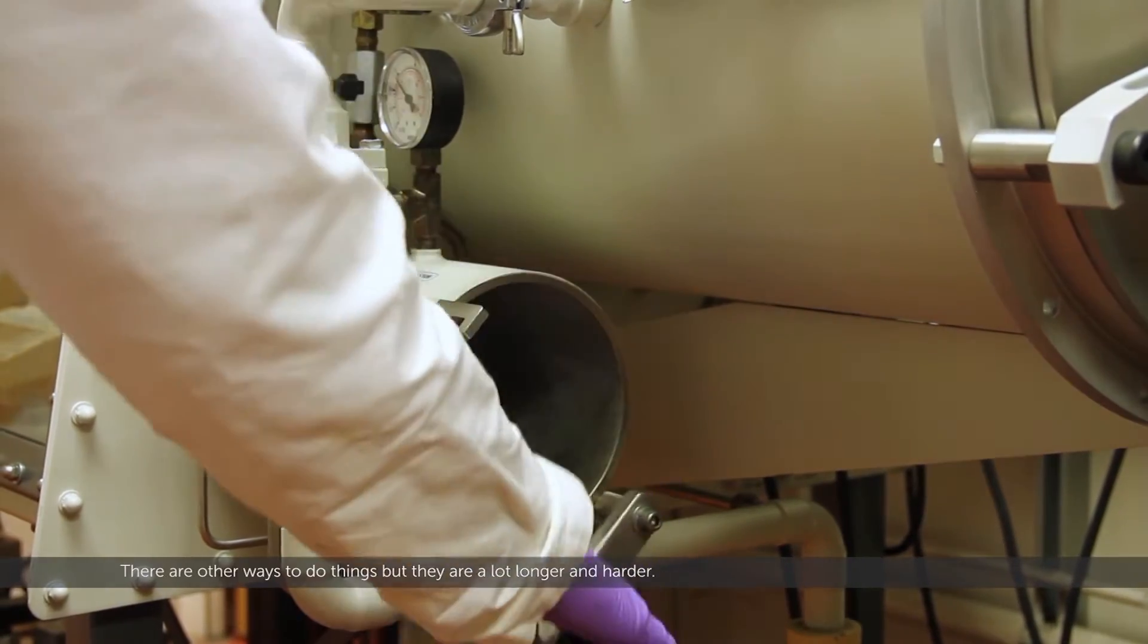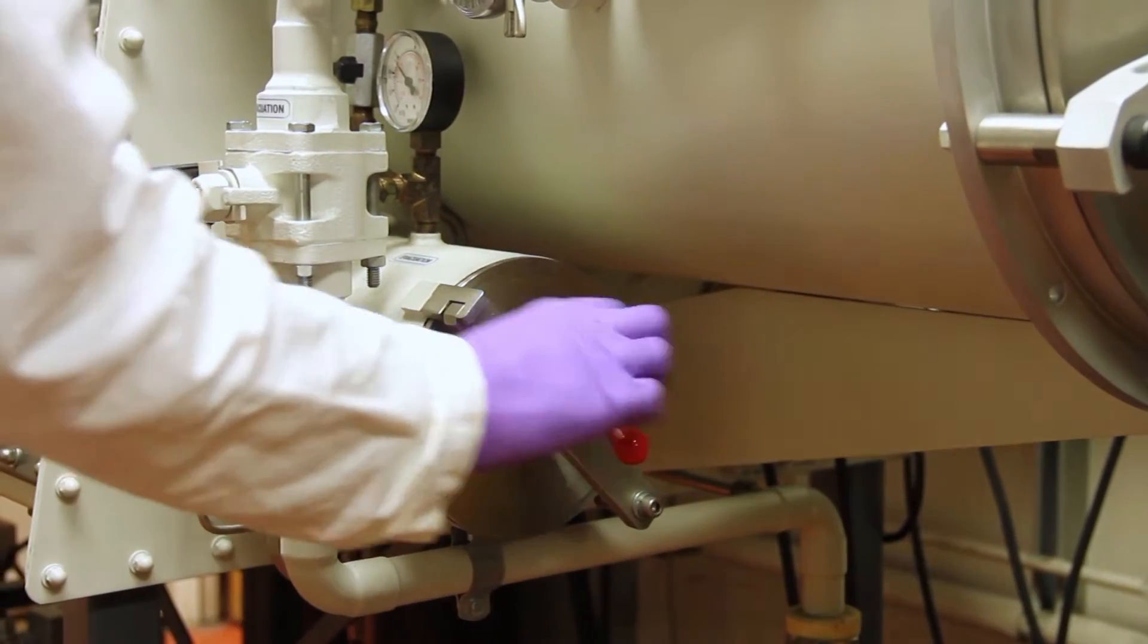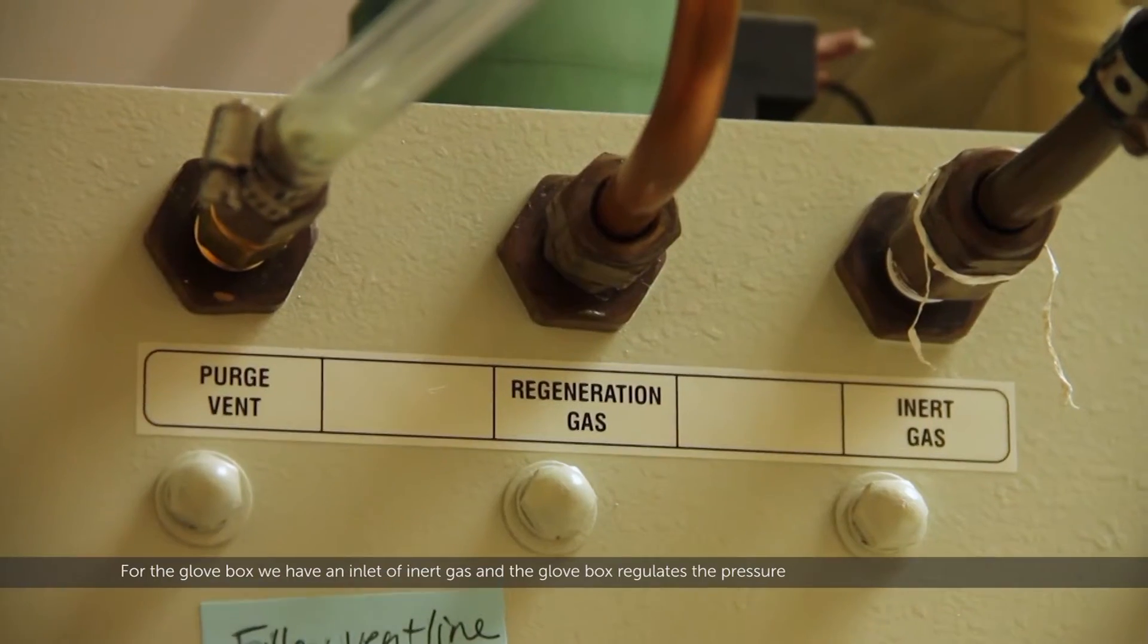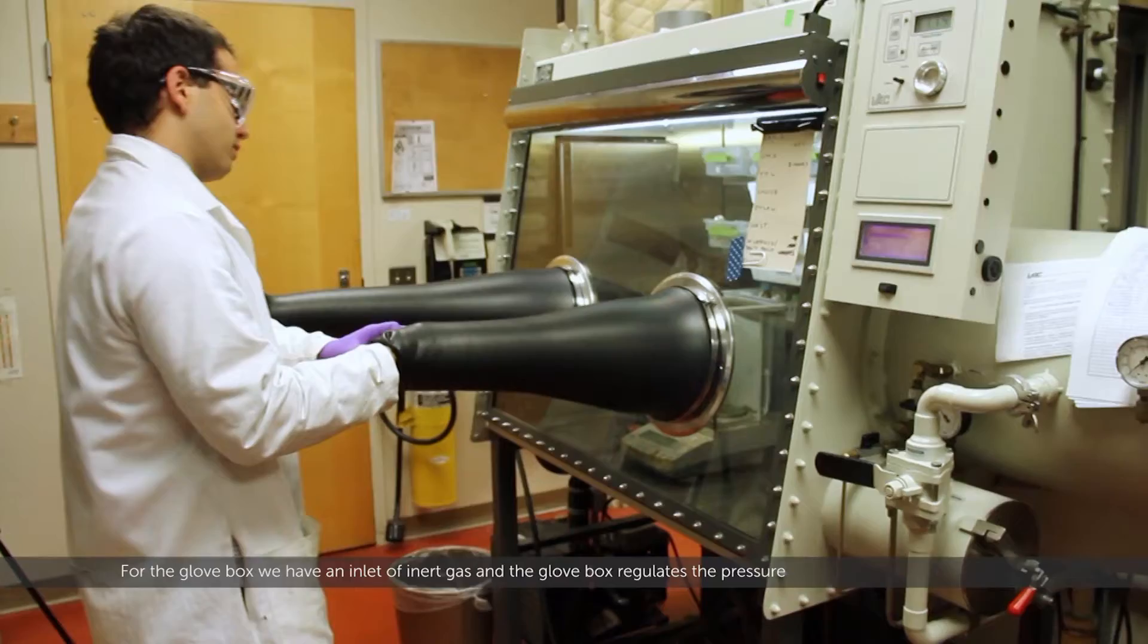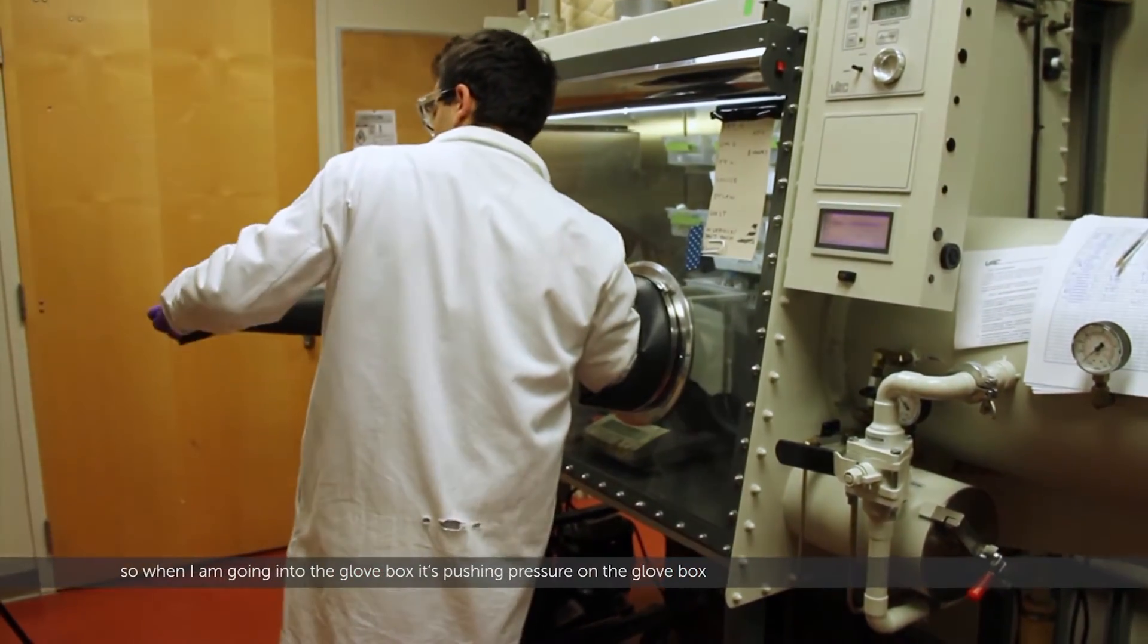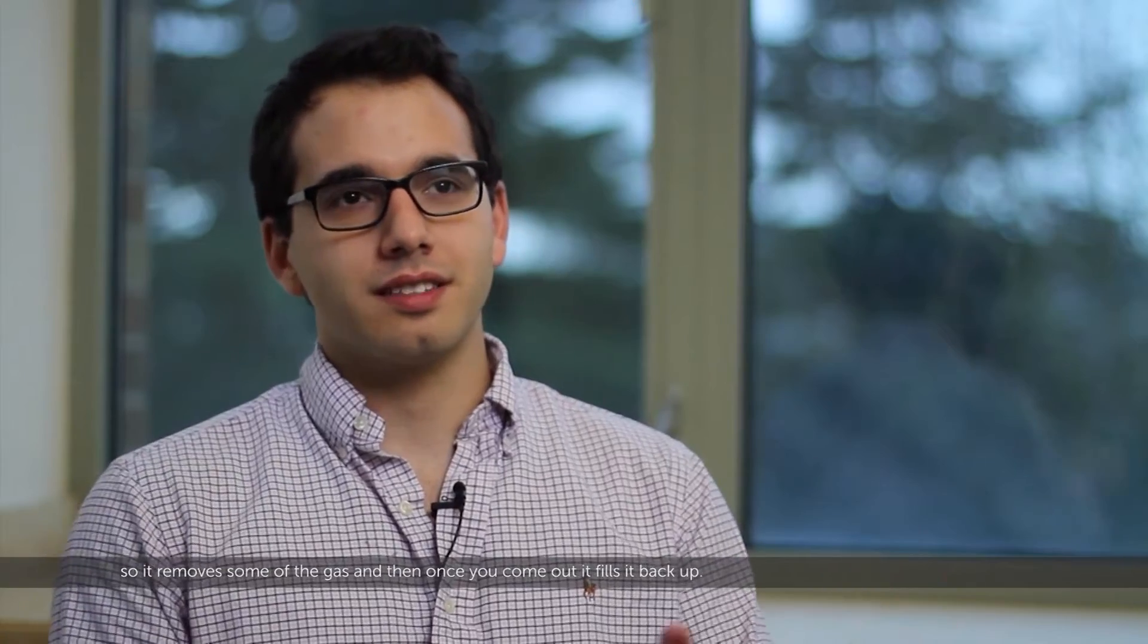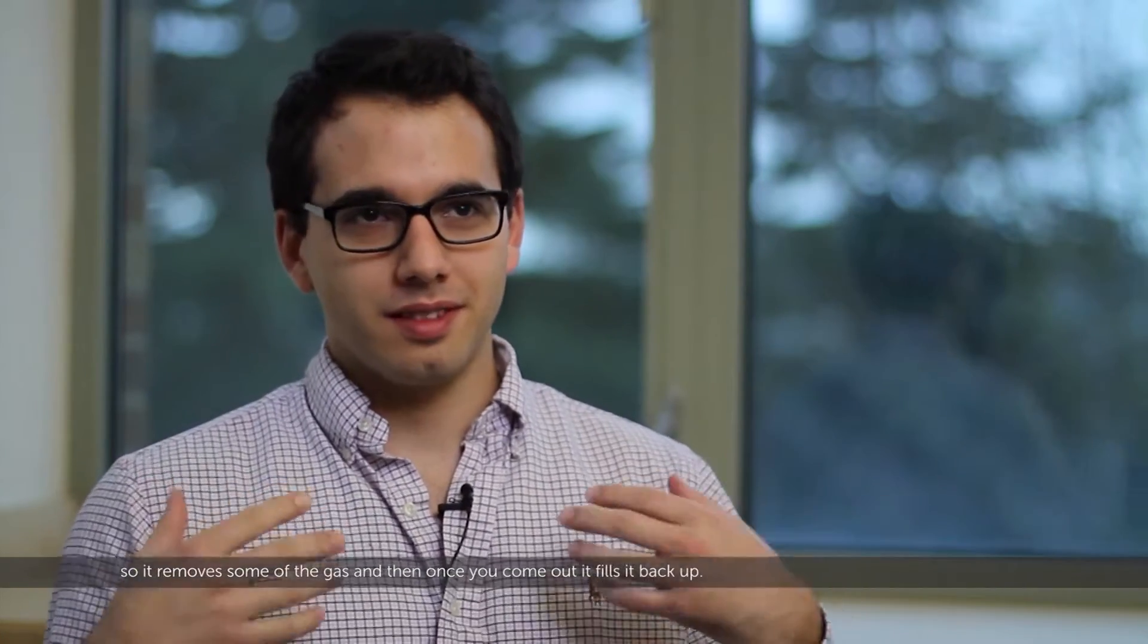There are other ways to do things but they're a lot longer and harder. For the glovebox we have an inlet of inert gas and the glovebox regulates the pressure. So when I'm going into the glovebox it's pushing pressure on the glovebox so it removes some of the gas, and then once you come out it fills it back up.